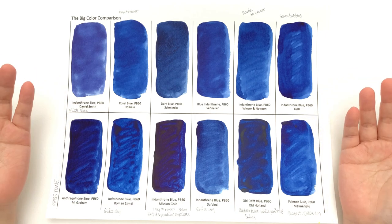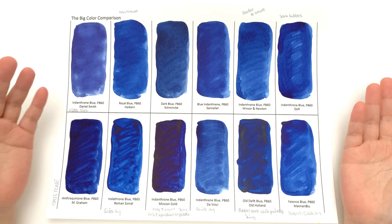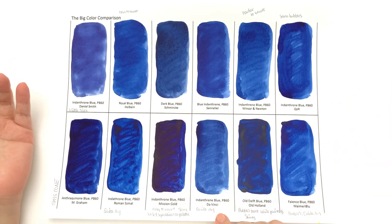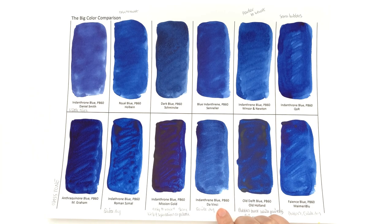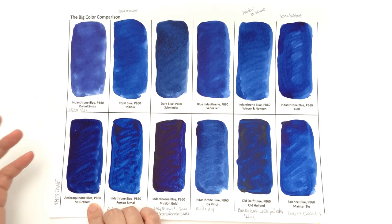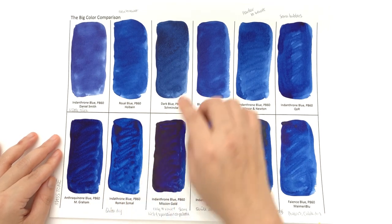I can see that some colors are a little bit more green blue rather than red blue, such as the Schmincke one and the Da Vinci one. These are definitely more on the green side, whereas things like the Anthroquinone Blue is very blue that's on a redder side.